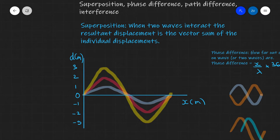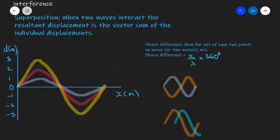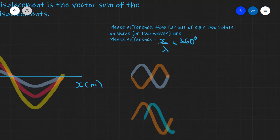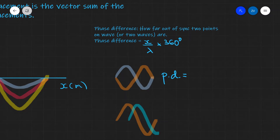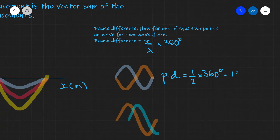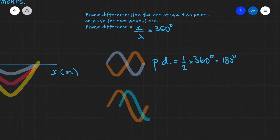Just before we move on, let's do a quick reminder of what phase difference is. Phase difference is how far out of sync two points in a wave, or two or more separate waves, actually are. This is expressed as a fraction of the wavelength times 360 degrees. For instance, these two waves here clearly differ by half a wavelength — this wave starts at the halfway point of the previous wave. So the phase difference, written as PD — please don't confuse that with potential difference in electricity — will be equal to the fraction x over lambda, which in this case is one half times 360 degrees, giving us 180 degrees.